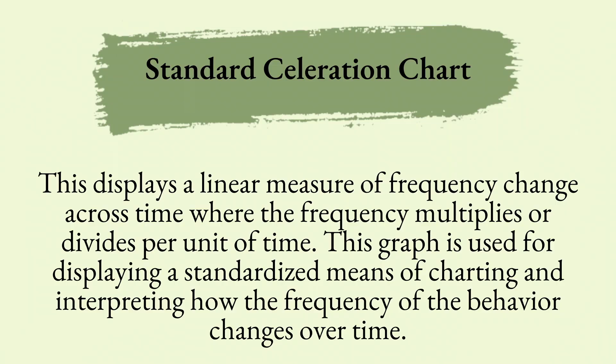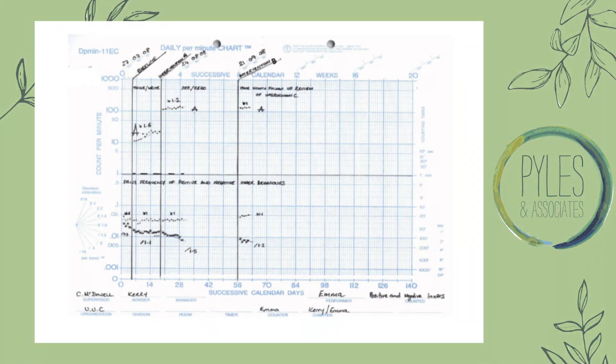Up next is a standard acceleration chart, which displays a linear measure of frequency change across time where the frequency multiplies or divides per unit of time — so this is going to look very different from our other graphs. This graph is used for displaying the standard means of charting and interpreting how the frequency of behavior changes over time. The data is based off of a ratio chart with six cycles of 10. On the vertical axis, it can accommodate responses varying between minutes, hours, and days — so it's a vast amount of information best used for behaviors you want to see over time.